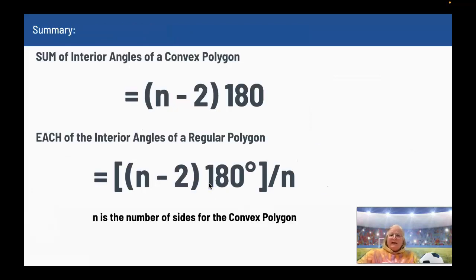The sum of the interior angles of a convex polygon is the formula N minus 2, N stands for the number of sides of the polygon, times 180 degrees. Each of the interior angles of a regular polygon would be this formula, the number of sides minus 2 times 180 degrees, and then divide by that number of sides, and you will have what each one is in a regular polygon. It's got to be a regular polygon.